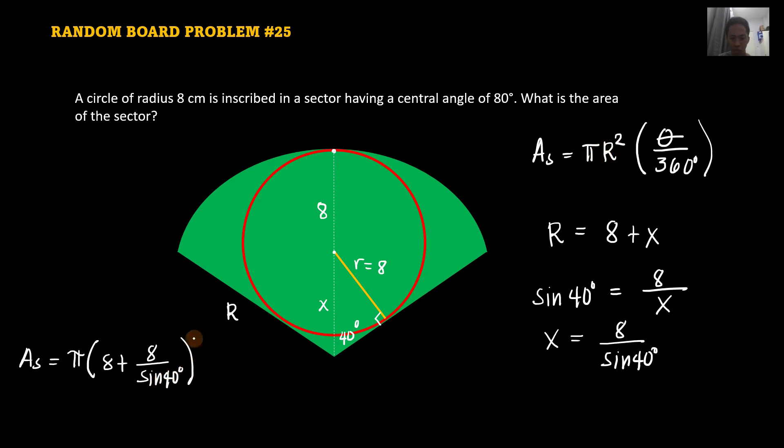So don't forget that it's squared. So squared times theta. Where theta is the central angle. In this case, our theta is 80 degrees. So don't forget that we're considering the whole sector. So that is 80 degrees. So here we have 80 degrees over 360.